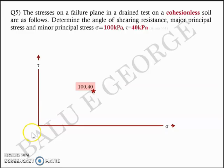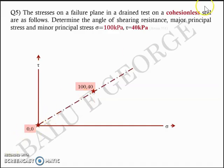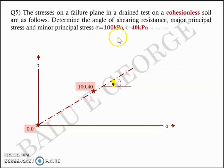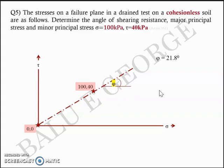You can connect a line from 0 passing through the point (100, 40). It's cohesionless soil, so obviously the intercept would be 0. There is a line that passes through (0, 0) and (100, 40) and it is a straight line. From the straight line, you will get the slope, which is nothing but the angle of internal friction or the angle of shearing resistance. The slope is 40 divided by 100, and taking tan inverse, you get the angle to be 21.8 degrees.